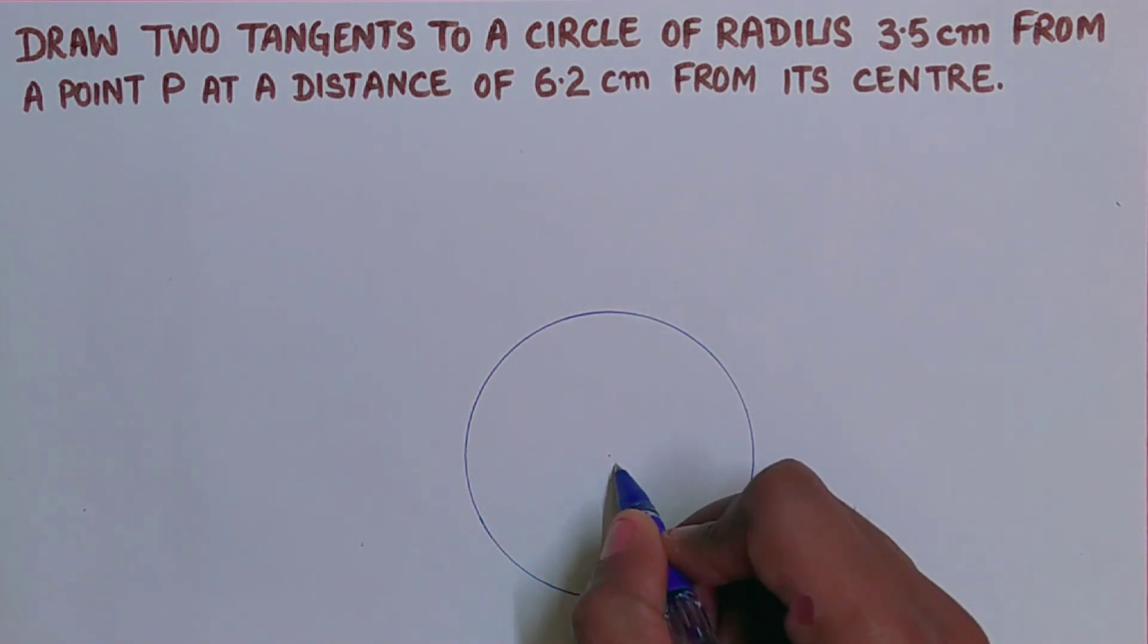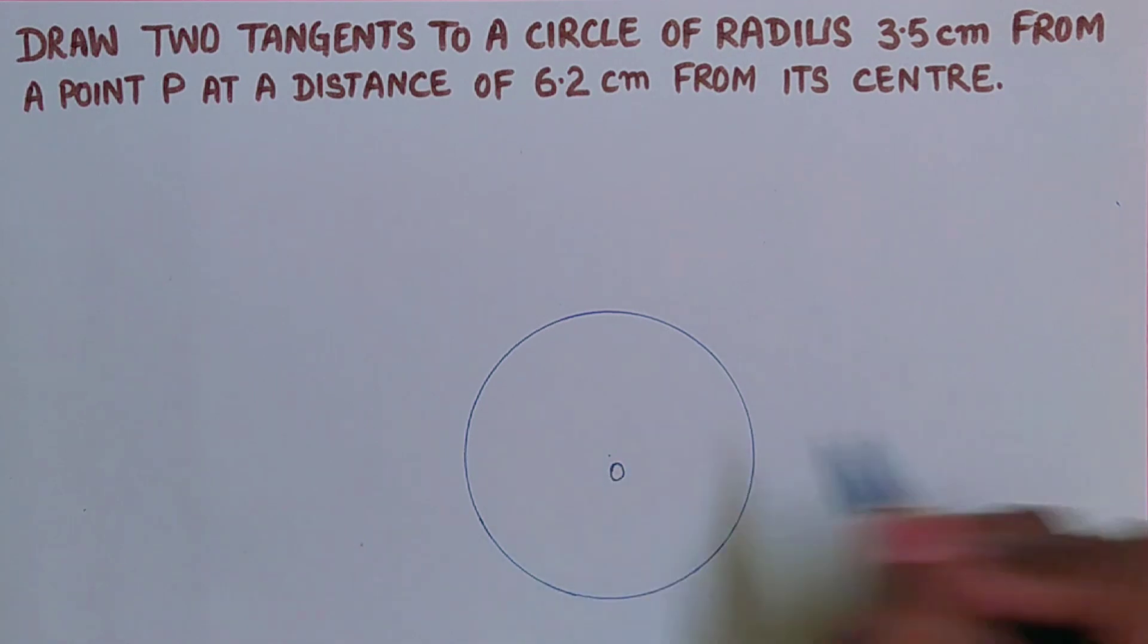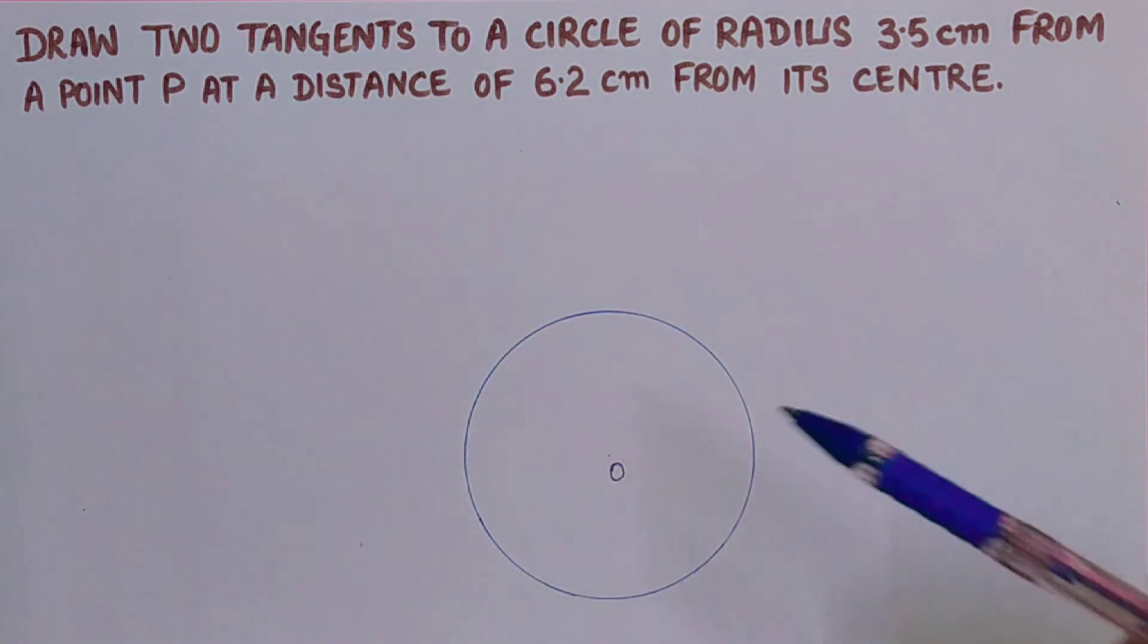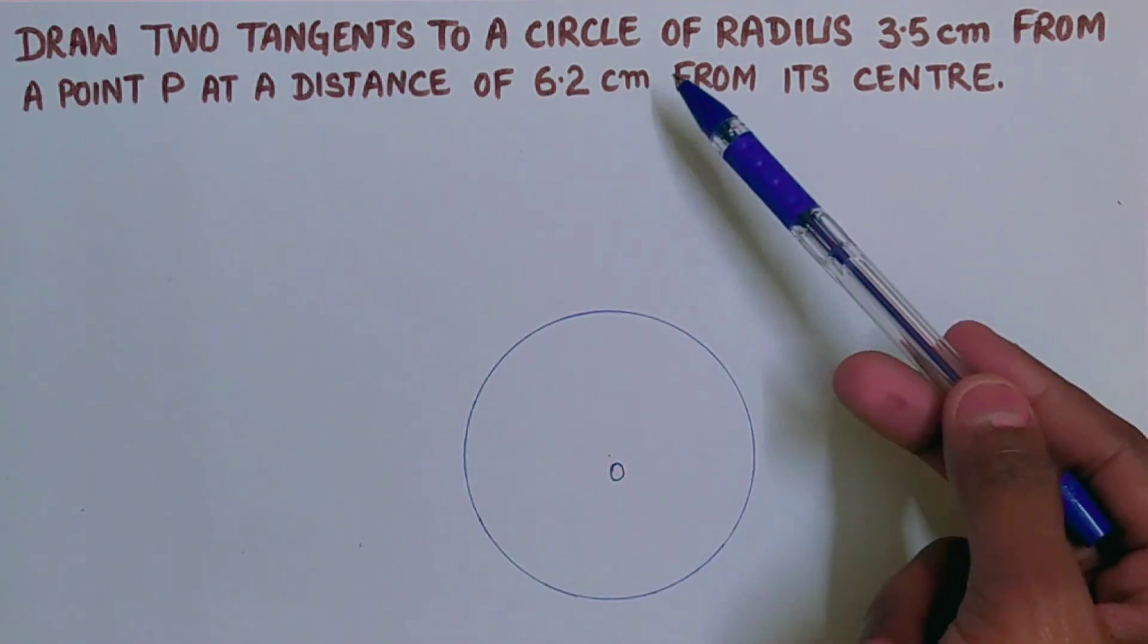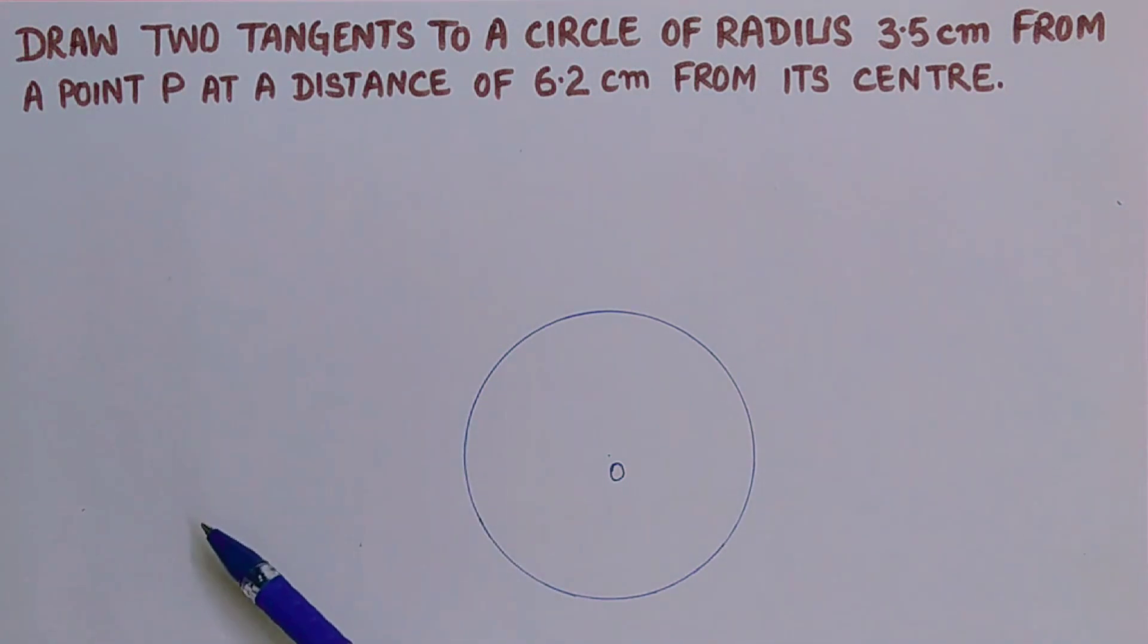Then from this center we have to take a point P which is at a distance of 6.2 centimeter. You can take either left hand side or right hand side.